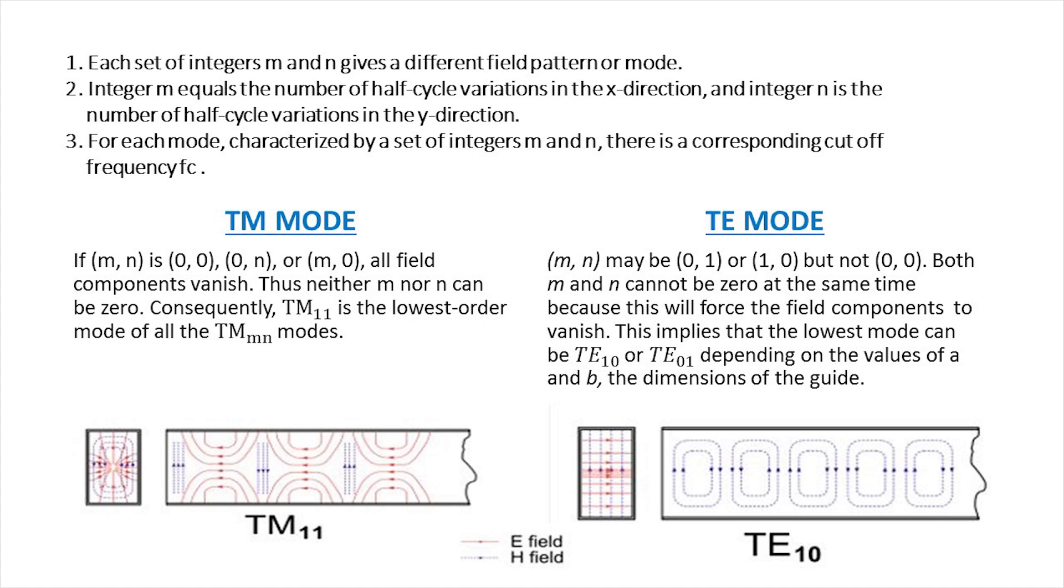TM mode: if m, n is (0,0), (0,n) or (m,0), all field components vanish, thus neither m nor n can be zero. Consequently, TM_11 is the lowest order mode of all the TM_{m,n} modes.